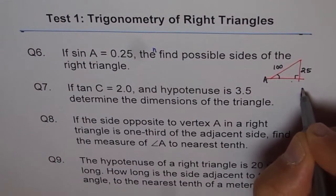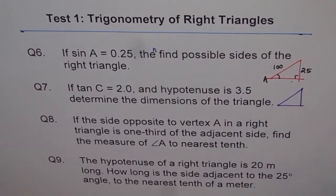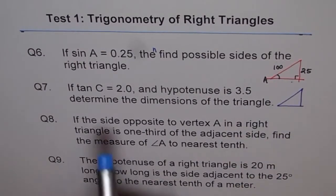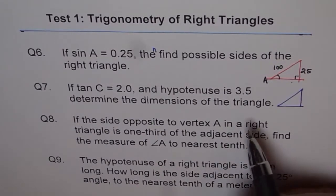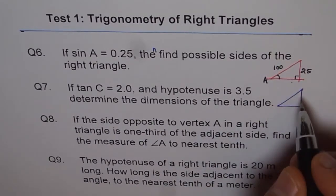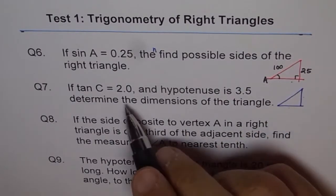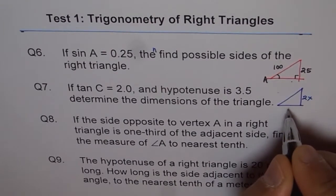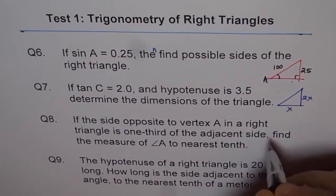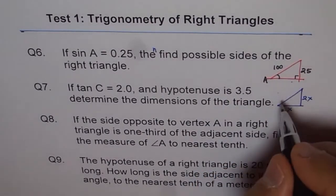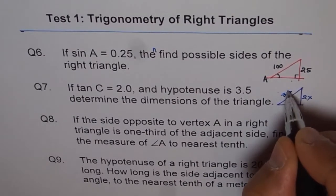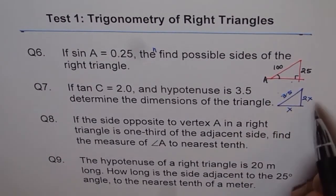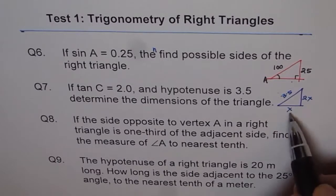Let's draw a triangle here. If tan C equals 2.0, that means the ratio of these two sides is 2 to 1. So you can write this as 2x and this as x, and hypotenuse is 3.5. Now you can write down 2x squared plus x squared equals 3.5 squared and solve for it. That is one way of doing it.